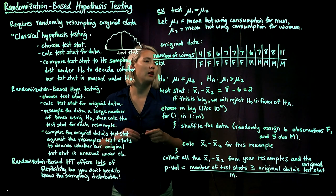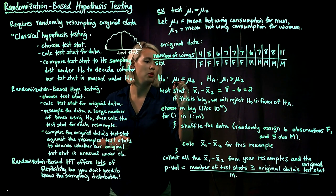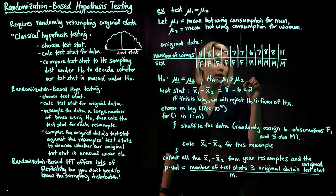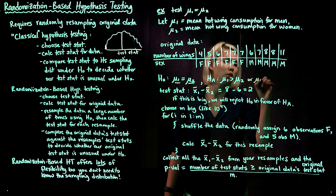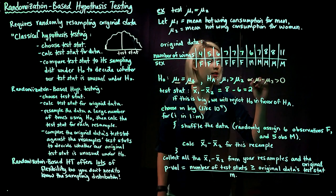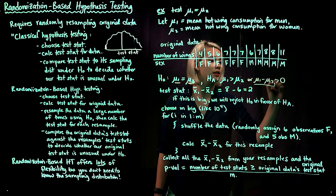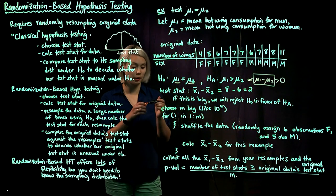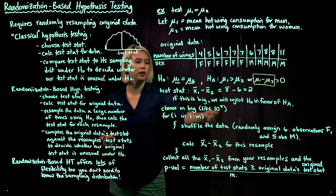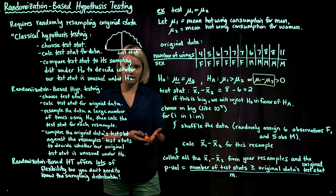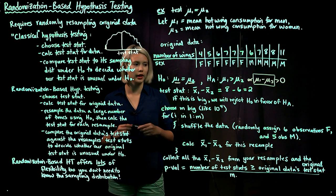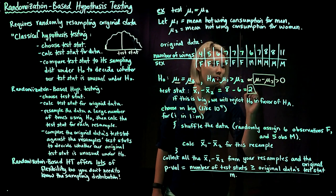Since we are testing H₀: μ₁ = μ₂ versus the alternative hypothesis H₁: μ₁ > μ₂ — which we can also write as μ₁ − μ₂ > 0 — it makes sense to use the test statistic x̄₁ − x̄₂. Calculating x̄₁ − x̄₂, we get 8 − 6 = 2. So in our data set, men ate two more wings on average than women.